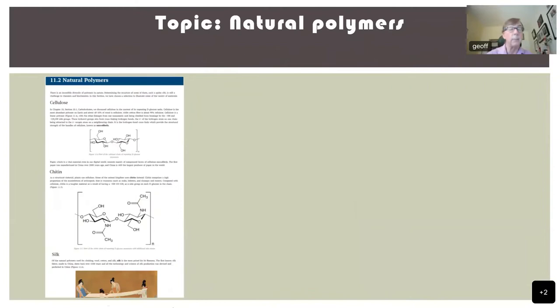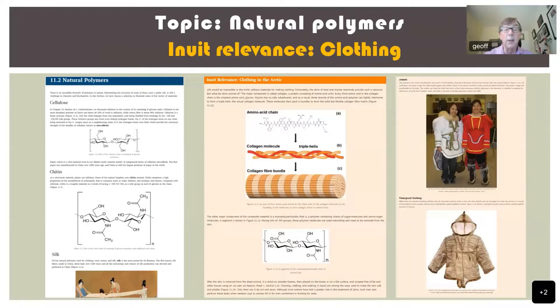Week eleven covers natural polymers and different types — again work done with Rosalina. We look at clothing: the nature of collagen, how it's made up, and then the types of clothing such as the amautik, worn by women with young babies, with an extra hood in the back. Then we get into waterproofing, which brings us back to hydrogen bonding and non-polar materials. So we keep looping back into chemistry content, and the Inuit relevance becomes a real constituent part of the course.